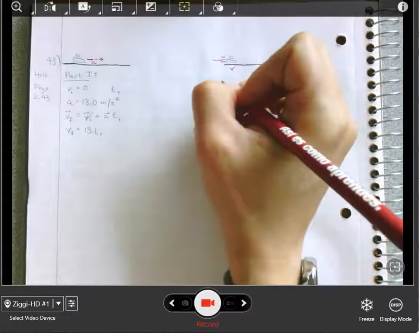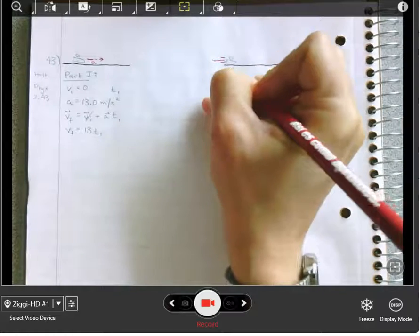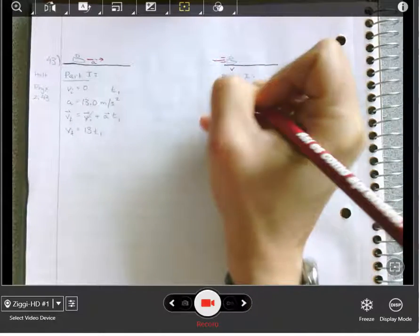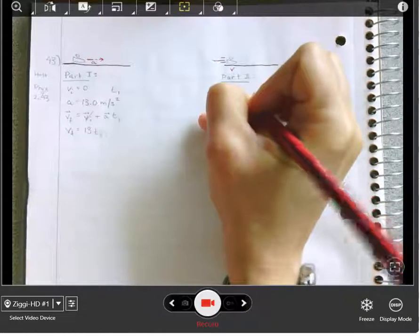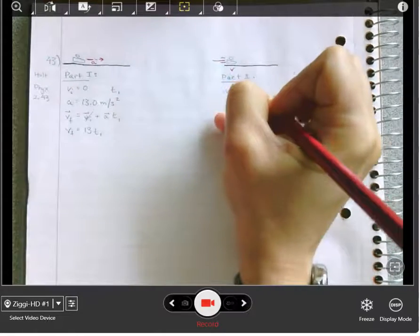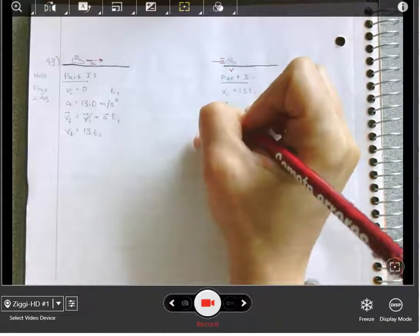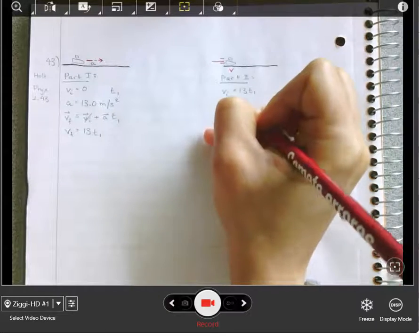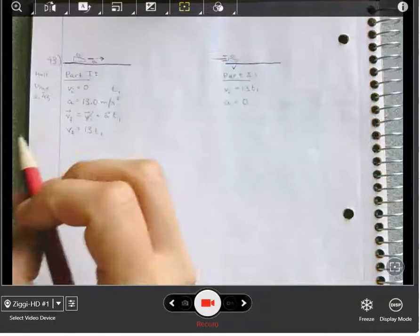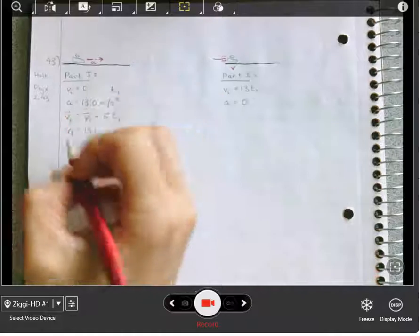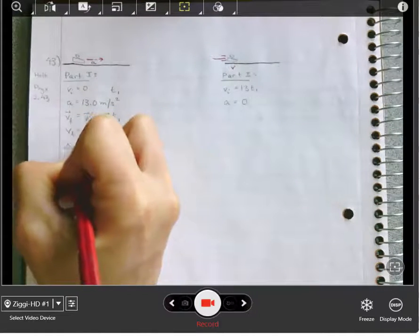That means our initial velocity here, when we coast away, is now known. And we know the acceleration. This is constant velocity here. Now, let's check in with how far this sled has gone. Our change in displacement.